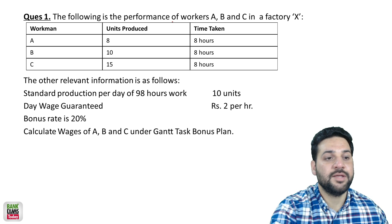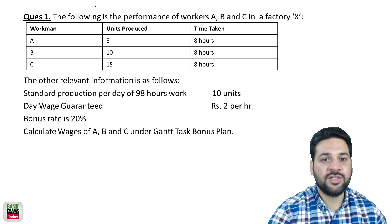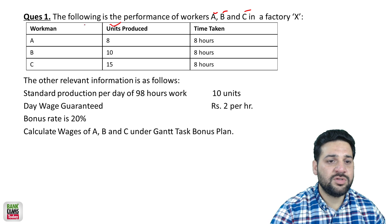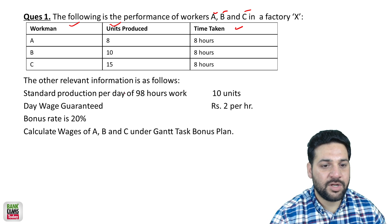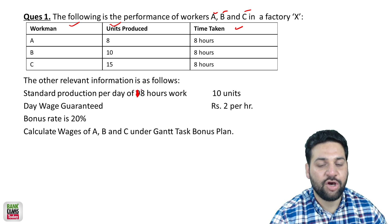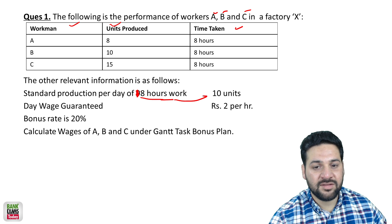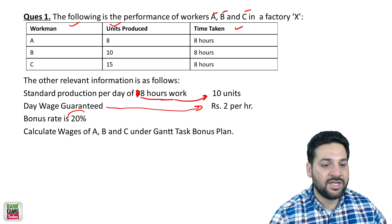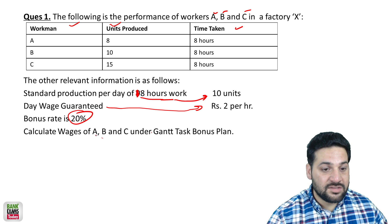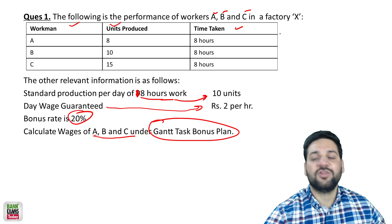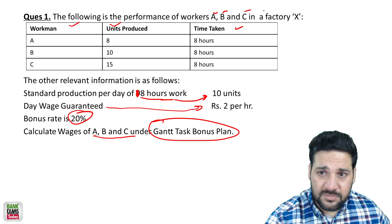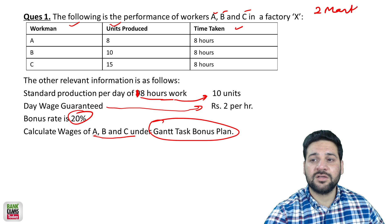So which of the following is the performance of workers A, B, and C in a factory X? Unit produced, workman, and time are given. Standard production per day of eight hours is 10 units. Day wage guaranteed is rupees two per hour. Bonus rate is 20 percent. Calculate the wages of A, B, C under the Gantt Task Bonus Plan — a very important numerical, possibly a two-mark question.